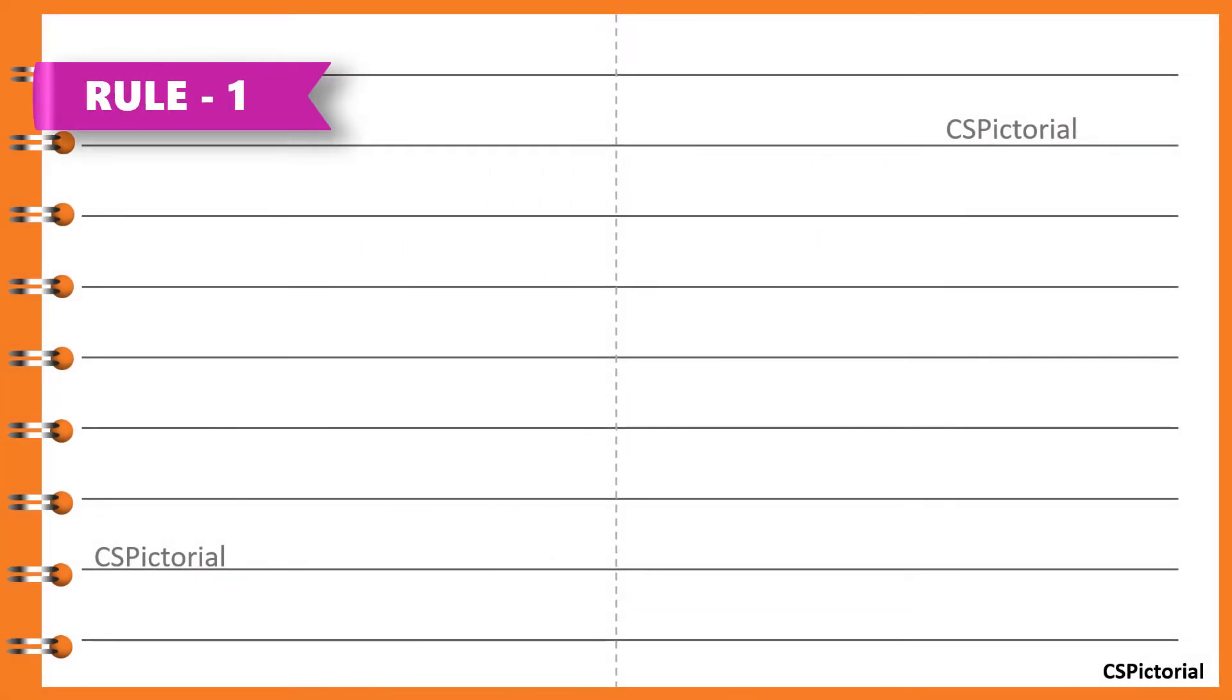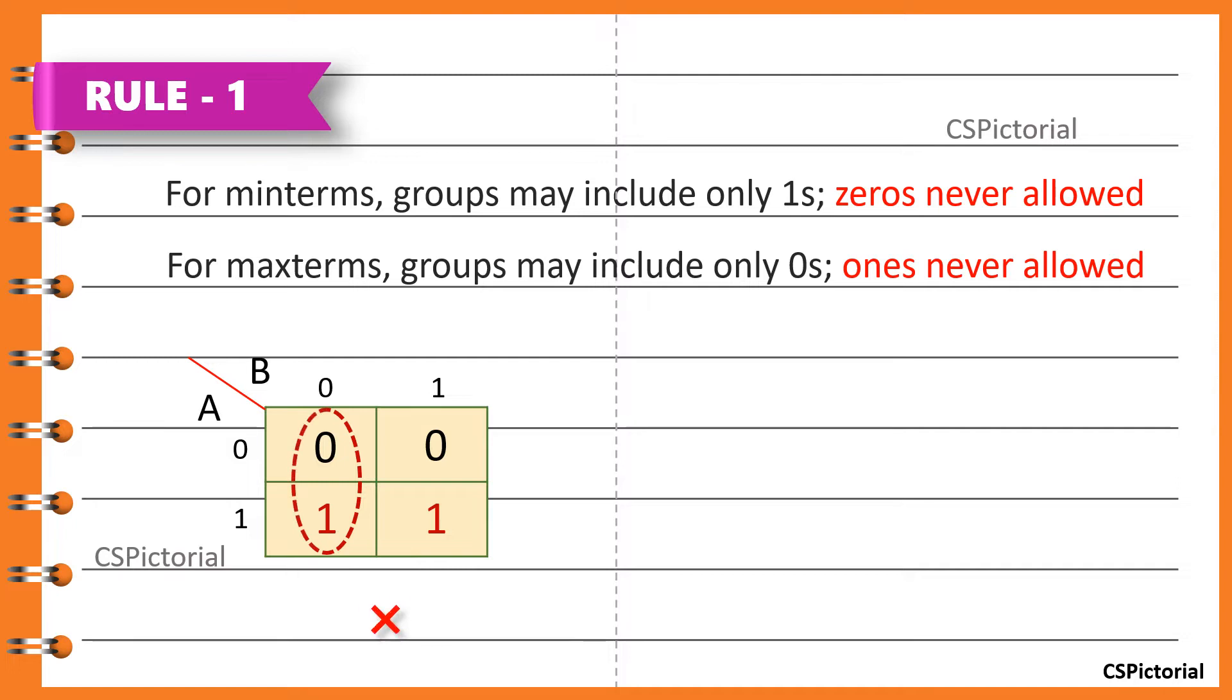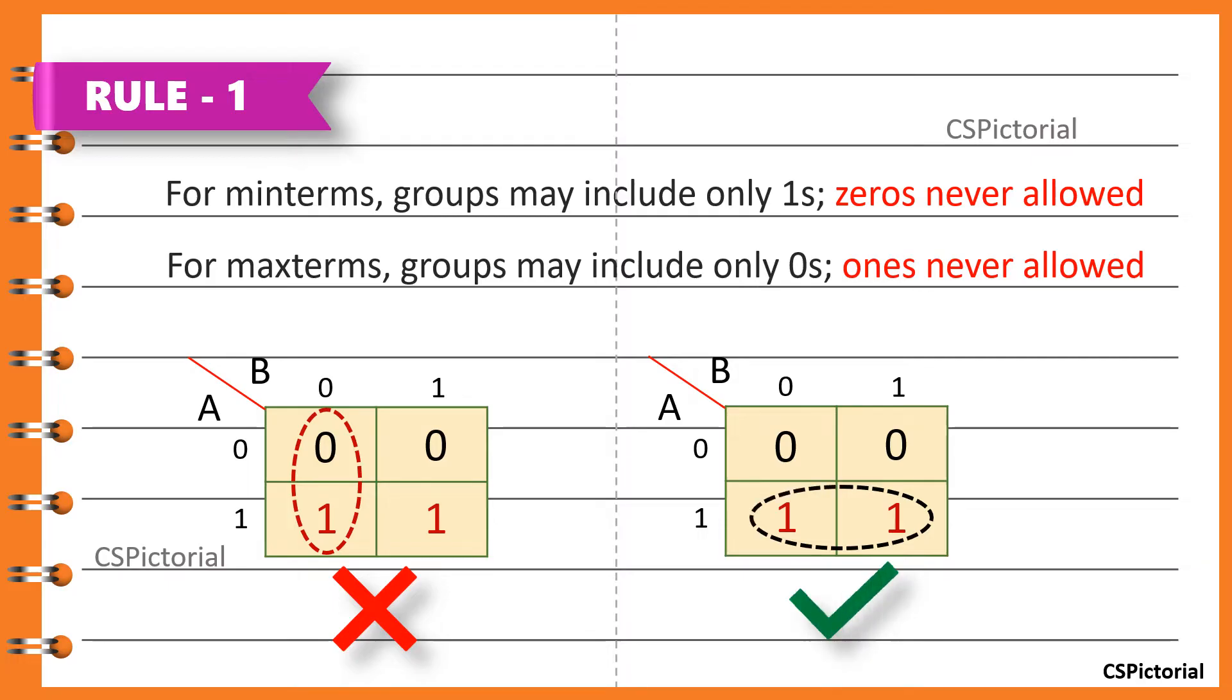The first rule states that for minterms, groups may include only ones; zeros are never allowed. Similarly, for maxterms, groups may include only zeros and ones are never allowed. So, in this example of minterms, the grouping should never be done with zero. The groups should include only the cells containing ones.